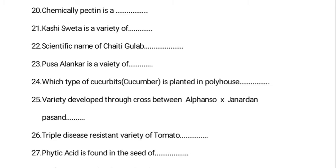The triple disease-resistant variety of tomato — a very common question — the right answer is Arka Rakshak. However, a new multiple disease-resistant variety recently released is Arka Abhed, which is resistant to leaf curl, bacterial wilt, early blight, and late blight. Please see my earlier video on recently developed varieties as these may be asked in JRF.